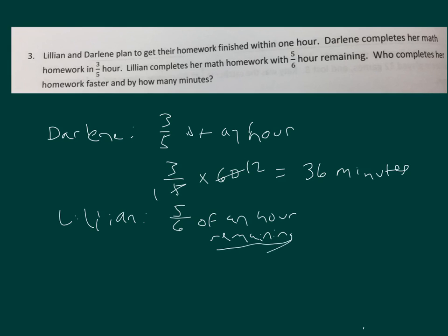Which means that she finished her homework in 1/6 of an hour. 1/6 of 60 is equal to 10. Who finished her homework faster? Lillian finished her homework faster. How much? 36 minus 10 equals 26 minutes.